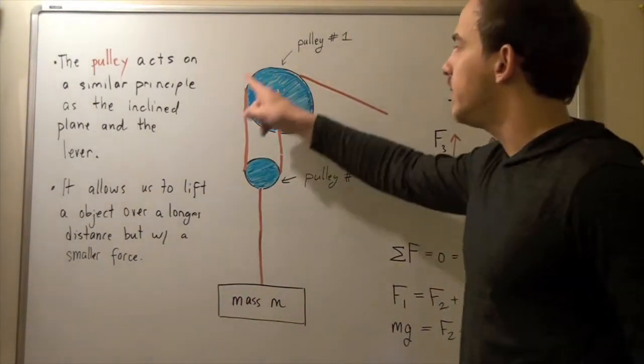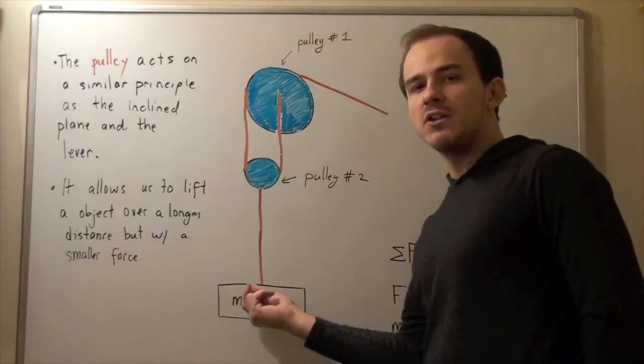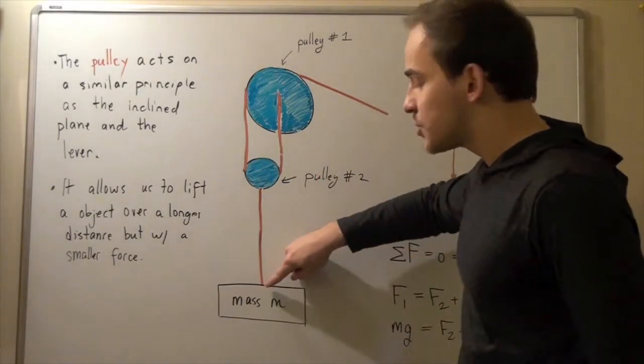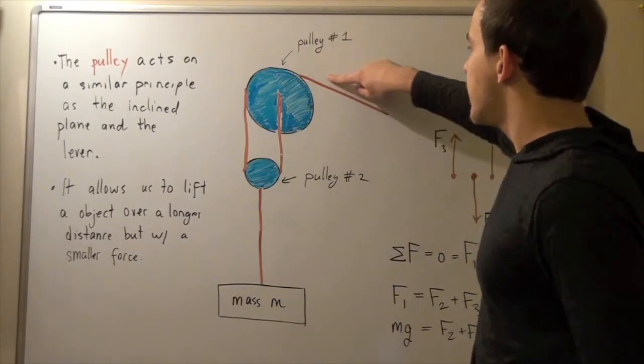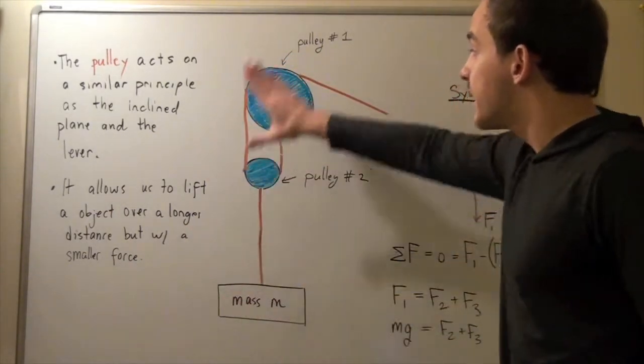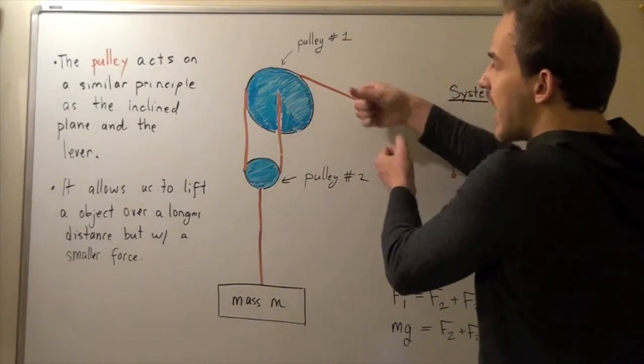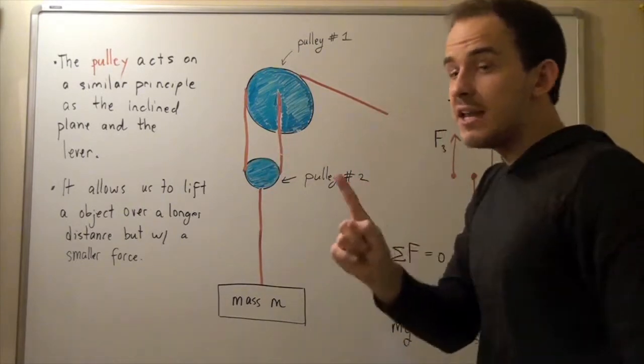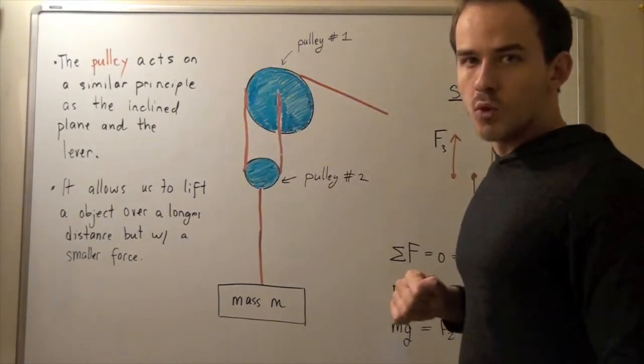Suppose we have pulley number one and pulley number two. And suppose we have a very long continuous rope that at one end is attached to some mass m and the other end loops around these pulleys and then it ends up at this point. So what I'm saying is the following: This system allows us to apply less force and we can actually lift this object with less force than if we simply take the object this way and begin lifting it upwards.